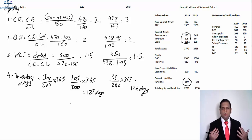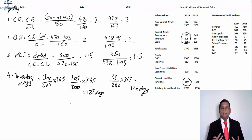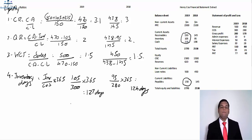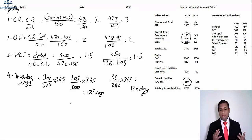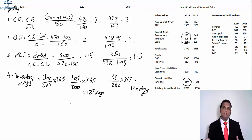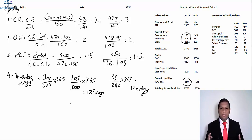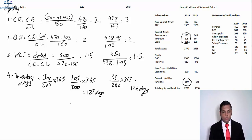It seems Henrico holds assets of a nature that need to be kept longer in inventory. Comparing 2018 to 2019, the number of inventory days has increased, showing the company needs to focus in this area. Holding inventory in the premises means incurring holding costs, and the inventory is not being converted to cash as quickly as last year — if left unchecked this could have serious negative consequences.